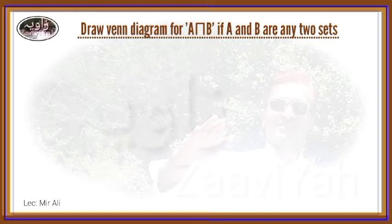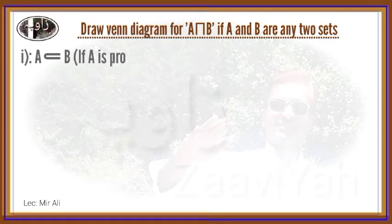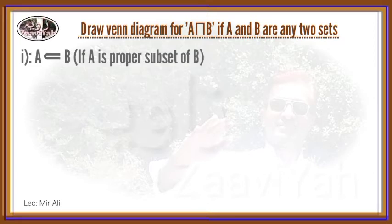The A-Intersection-B Venn Diagram is drawn. The second case is where set A is a proper subset of set B, and we draw the intersection Venn Diagram accordingly.